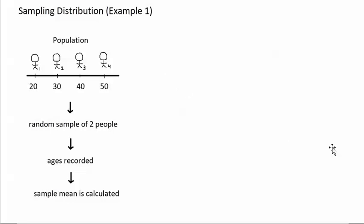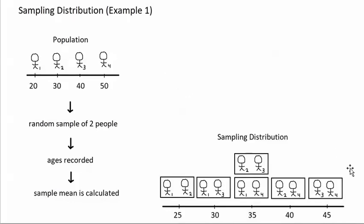Let's take a look at what that distribution would look like. In this distribution, we are looking at the six combinations of two people that could be selected from this population. These are the six possible samples that might be selected. Only one of them will become the actual sample. Each of the six possible samples of two people is placed above its sample mean. Person 1 and person 2 have a sample mean of 25, because person 1 is 20 and person 2 is 30, and 20 plus 30 is 50, and 50 divided by 2 is 25.